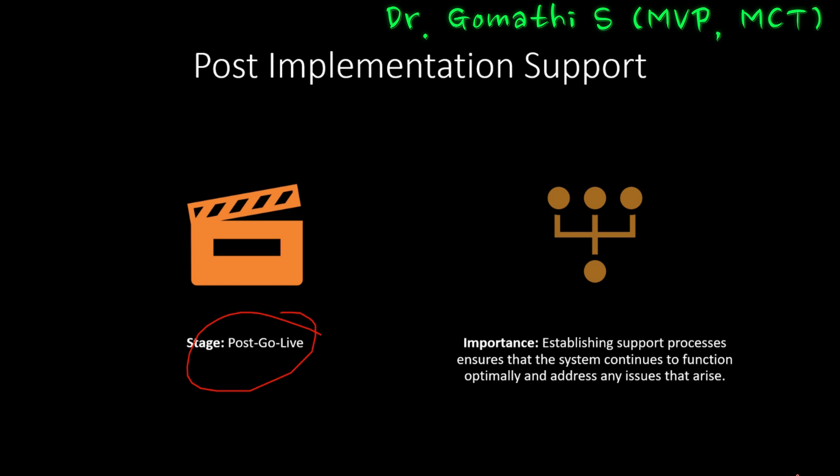Finally comes post-implementation support, the post-go-live stage. Just as a ship requires maintenance to sail smoothly, post-implementation support ensures the new system continues to navigate challenges effectively. The journey doesn't end at go-live — in fact, it's just the beginning. We establish processes for ongoing support and maintenance, providing a reliable point of contact for user queries, resolving issues, and keeping the system up to date. Continuous support enables users to maximize the system's potential, adapt to changes, and capitalize on opportunities.